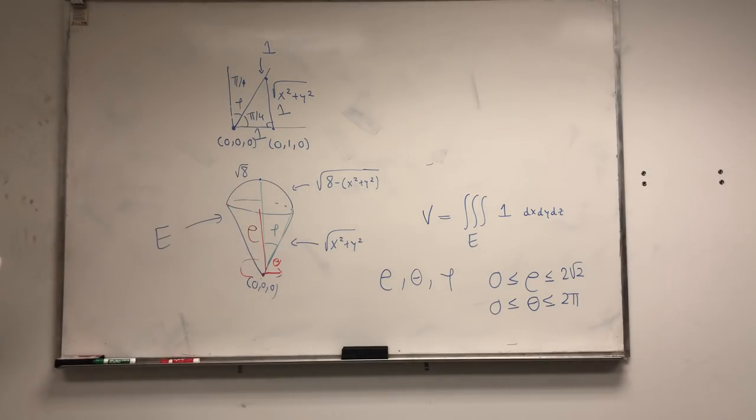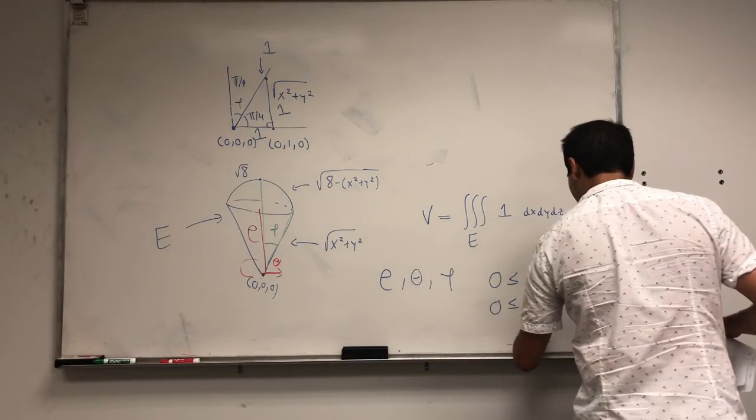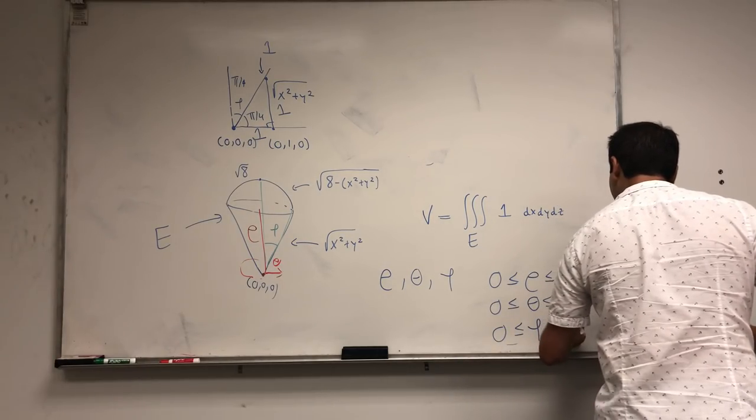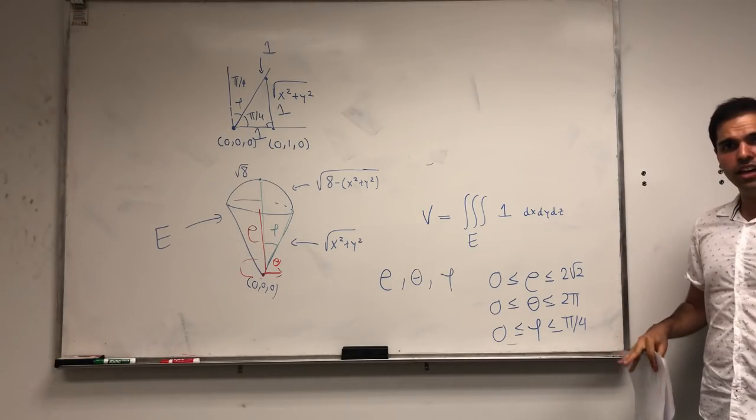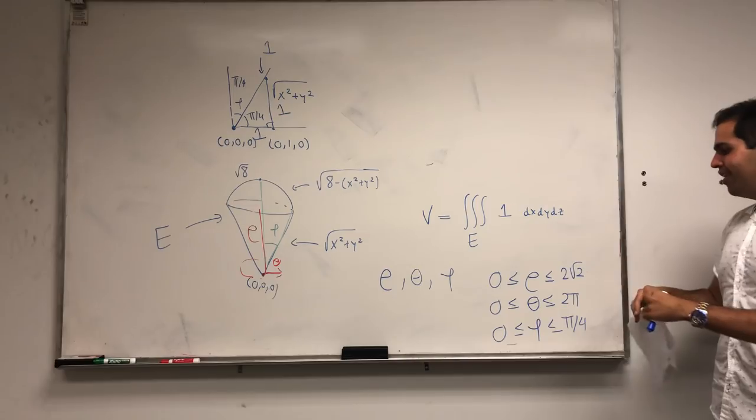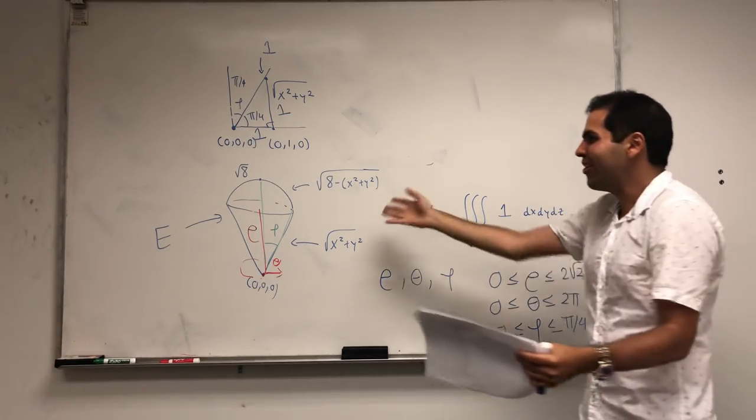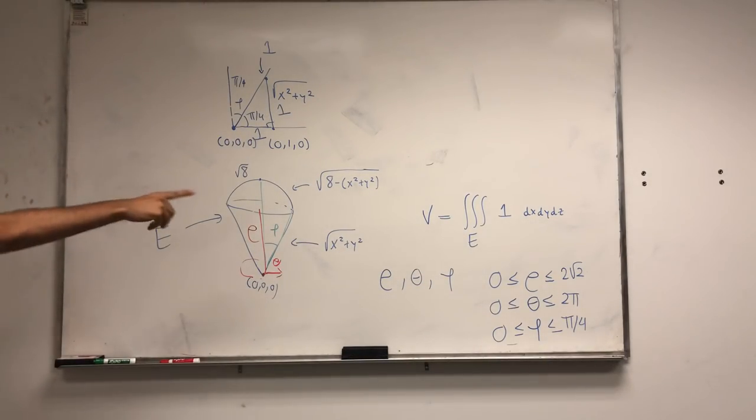That's just my quick derivation. So in particular, this angle phi cannot go more than pi over four. So phi is between zero and pi over four. And here's a cool thing: rho, theta, and phi don't depend any more on other variables. And so in particular, this integral becomes a very nice integral with constant endpoints.